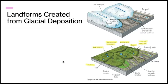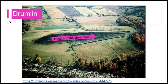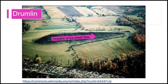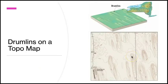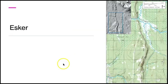Some common depositional landforms that form when continental glaciers retreat are terminal and recessional moraines, drumlins, eskers, and kettle lakes. While the origin of drumlins is up for debate, it is agreed that they form from the deposition of till beneath continental glaciers. Commonly, they are asymmetric in shape, with a steeper side and a less steep side — the steep side faces the direction from which the glacier advanced. Here's what drumlins can look like on a topographic map. Eskers also form from till beneath a glacier, but are considerably longer and form when a meltwater stream exits a glacier. Here's an esker on a topographic map.